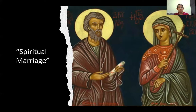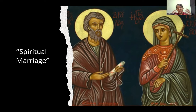Another forerunner of the monastic movement was something known as spiritual marriage. In spiritual marriage, Christian men and women agreed to live together but also agreed to practice chastity. Essentially, spiritual marriage was platonic marriage. This gave Christian women the protection of men, but freed them from the sexual expectations of marriage that existed during the first century.